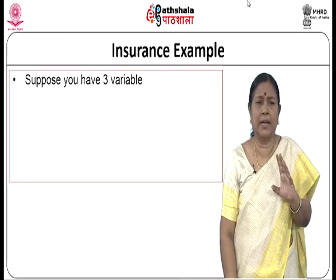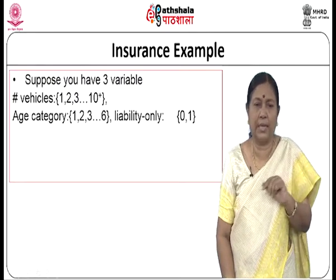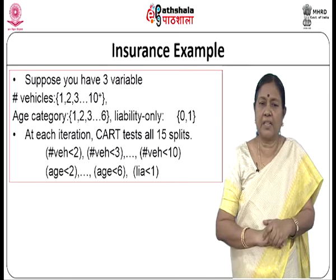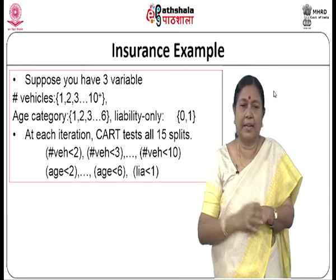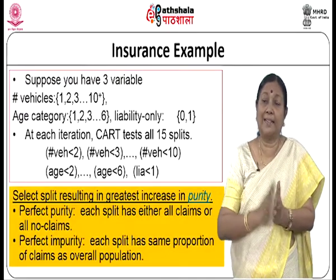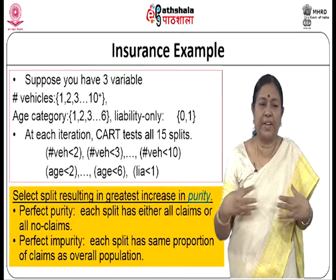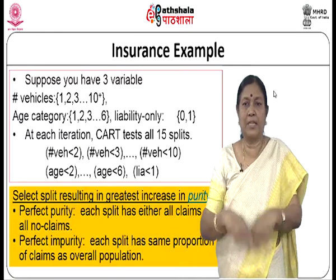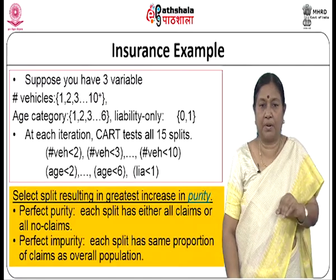In an insurance example with three variables — number of vehicles (1, 2, ...), age category (1, 2, 3–6), and liability (0, 1) — at each iteration CART will test for 15 possible split tests, such as vehicle < 3, vehicle < 2, vehicle < 10, age < 2, age < 6, liability < 1, and so on. Select the split resulting in the greatest increase in purity. Perfect purity means each split has all claims or all non-claims; perfect impurity means each split has the same proportion of claims and non-claims.